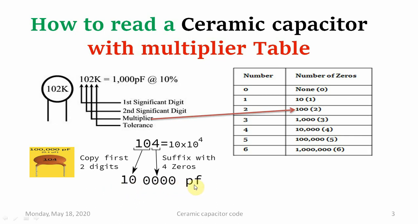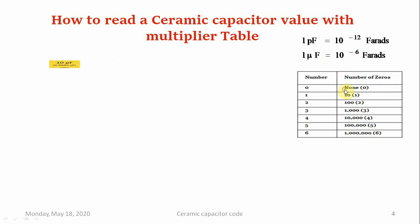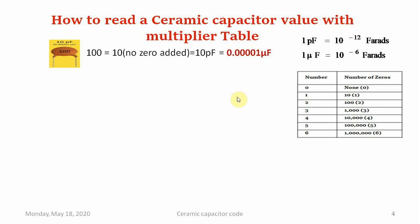Now we will try to understand how different capacitor values are measured and calculated with the help of the tolerance table as well as the multiplier table. Before that, we should know that 1 picofarad stands for 10 to the power of minus 12 farads, and 1 microfarad stands for 10 to the power of minus 6 farads. This is the multiplier table.